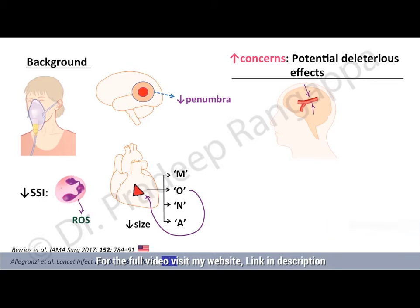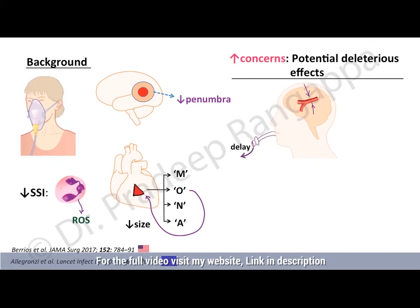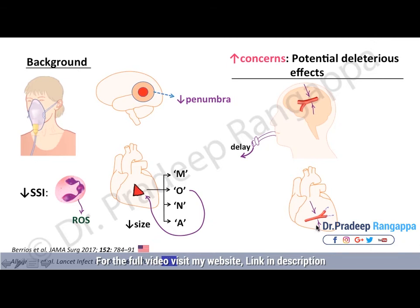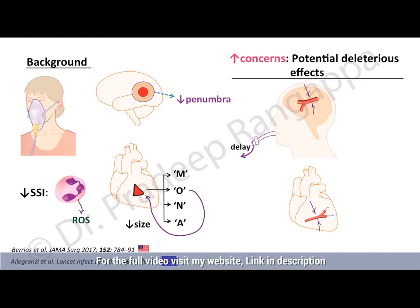Oxygen causes vasoconstriction in the coronaries as well, which may lead to coronary hypoperfusion and hypoxia, resulting in bad outcomes. Oxygenation can also induce fibrosis, worsen or induce acute lung injury, and may cause atelectasis. These are some of the deleterious effects of giving oxygen unnecessarily, even in the face of its assumed beneficial effects in stroke, skin and soft tissue infections, myocardial infarction, or acute coronary syndrome.